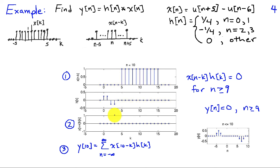And that's going to hold true no matter how far I slide x of n minus k to the right. In other words, no matter how big n gets. And so I'm going to have y of n become 0 whenever n is greater than or equal to 9.